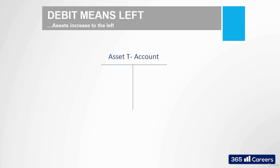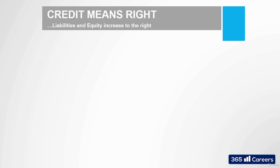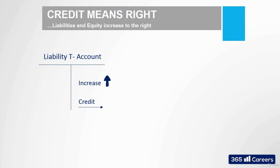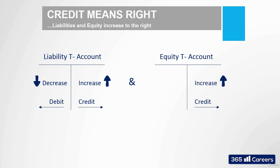Assets increase on the debit side and decrease on the credit side. Therefore, if we want to show that the firm has bought new assets, we will write it on the left side of the T-account. Given that liabilities are the opposite of assets, when we increase a liability, we have to write on the credit side. If a liability is decreased, it will be written on the debit side. The same goes for equity — increases are on the right side and decreases on the left.